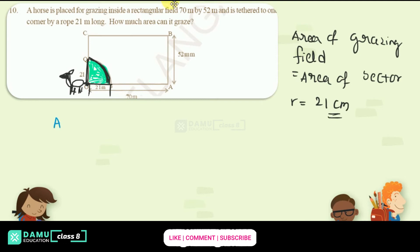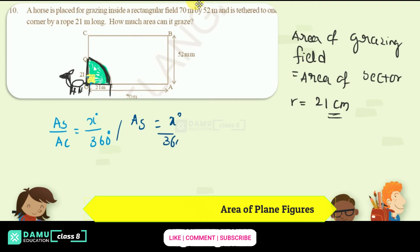Area of sector will be equal to area of sector by area of circle, which is x degree by 360 degrees. So here what is the angle? Here the angle is 90 degrees. Then area of sector will be equal to, let's check: